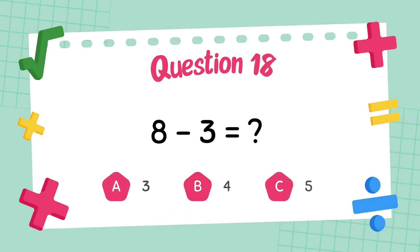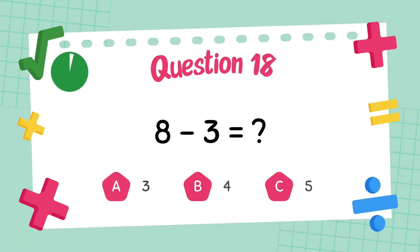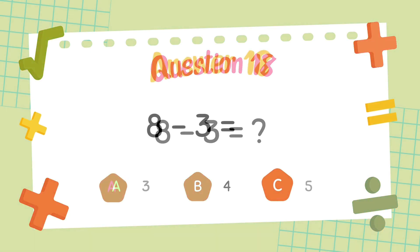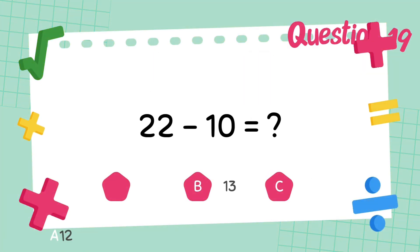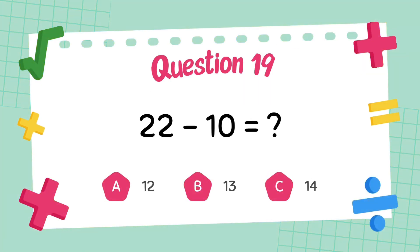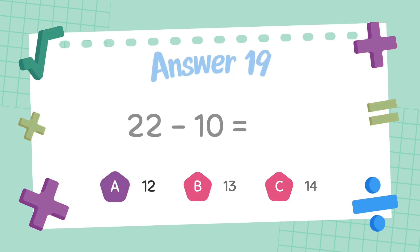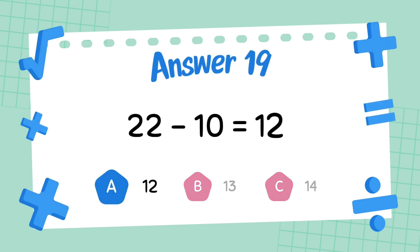What is 8 minus 3? The answer is 5. What is 22 minus 10? The answer is 12.